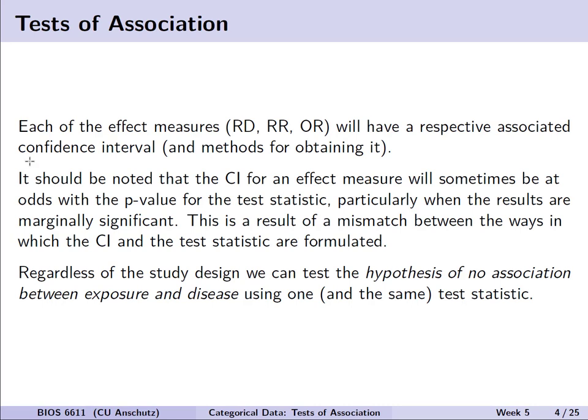Because of this, it is important to keep in mind that the confidence interval for an effect measure can sometimes be at odds with the corresponding p-value we may get for that test statistic. This particularly happens when the results are what we would call marginally significant, really close to the boundary we're trying to evaluate, such as an alpha of 0.05 and p being near 0.05. This is partially a result of the mismatch between different ways we may calculate a confidence interval versus how we calculate the p-value for the test statistic.